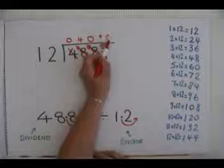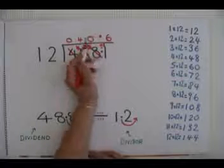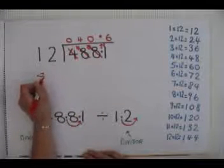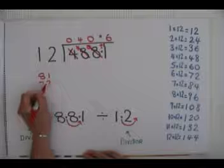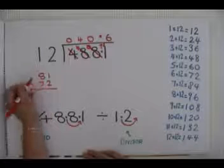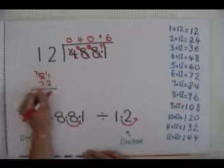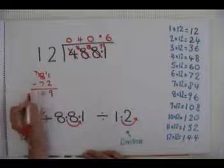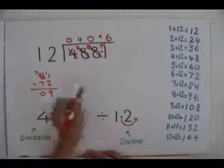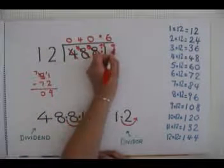We write a 6 up here. And we work out the difference between 81 and 72. Take 72 away from 81. Give us a remainder of 9. We write 9 here.